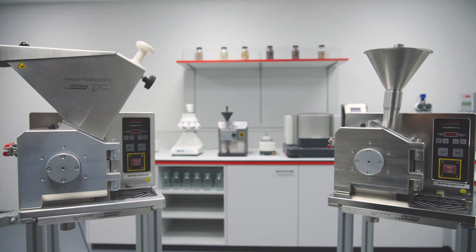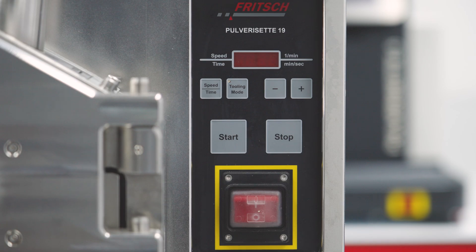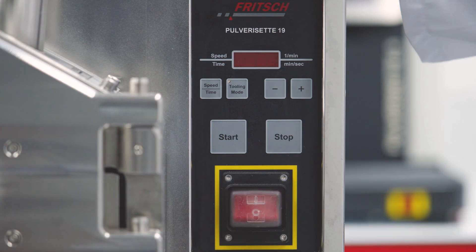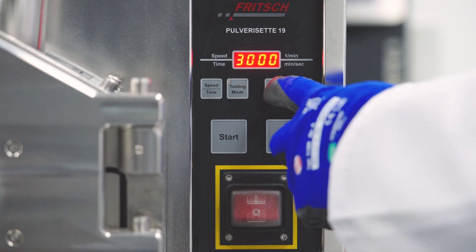Our P19 cutting mills are powerful all-rounders for the comminution of a wide variety of materials, from soft to tough, fibrous to brittle.